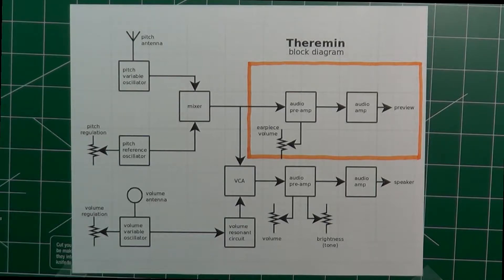Note also that the capacity between the hand and the antenna depends on several factors, like the humidity of the air, the size of the hand of the player, the proximity of the body, and the body size, and so forth. So to make sure that the instrument is correctly tuned to the person that plays it, we need to be able to tune the pitch reference oscillator, and that's the reason for this potentiometer.